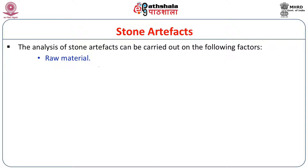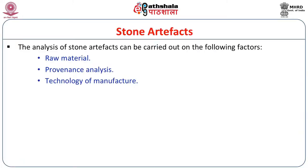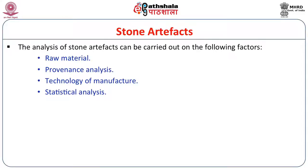We can enquire into the raw material of the stone and conduct provenance analysis — provenance meaning from where the raw material came. For example, a stone found in Harappa may not be locally available and could have come from a distant area. A quartz material found only in Gujarat, if found at Harappa, indicates it came from there. We can also understand the technology of manufacture and do statistical analysis to understand what kinds of stones were predominantly used — whether locally available or from outside.